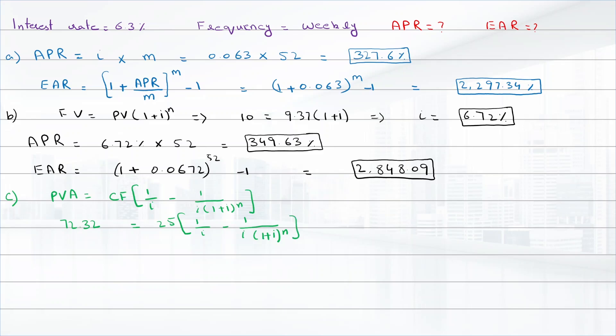Using spreadsheet or trial and error method or financial calculator, we find interest rate is 14.35 percent per week. And now again we have to find APR and EAR. The APR will be 14.35 percent multiply by 52, that will be equal to 746.31 percent.